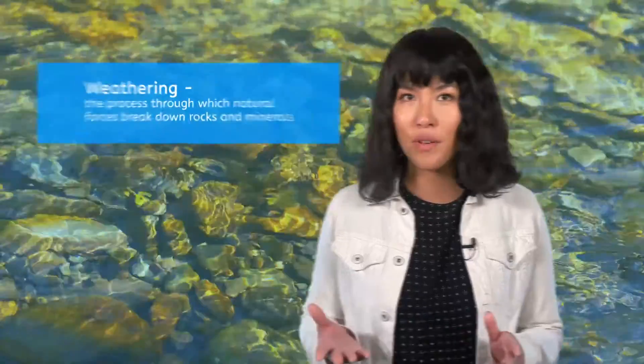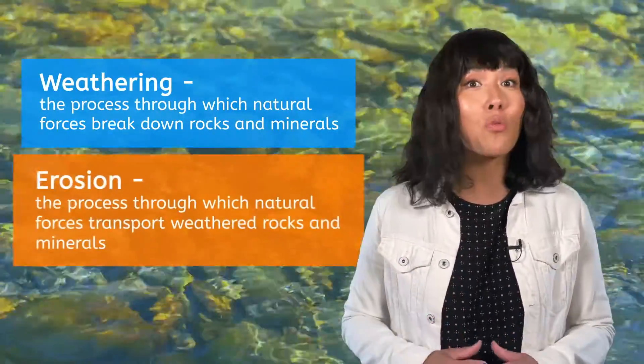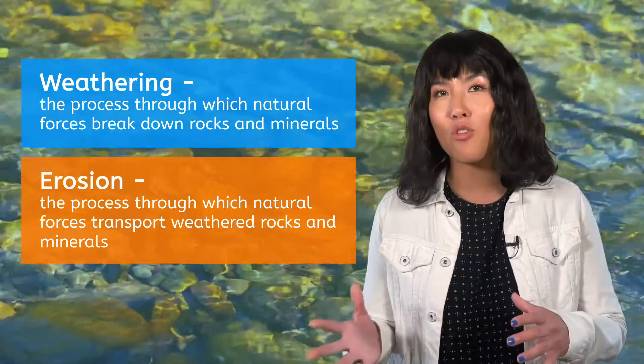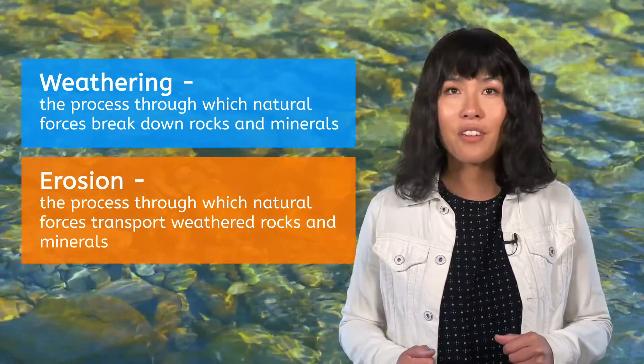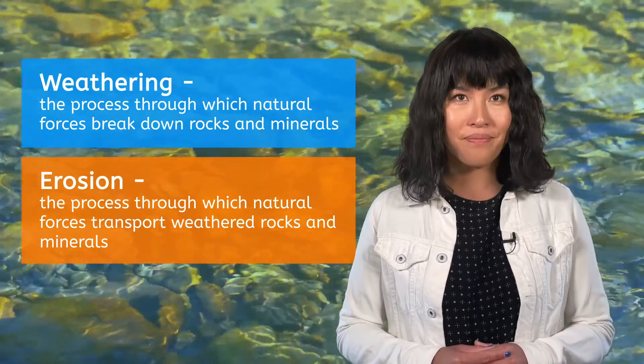In our last lesson, we learned about the processes of weathering and erosion. Weathering is when natural forces break rocks down, and erosion is when these forces move them across the Earth's surface. For now, we're going to mostly focus on erosion. Erosion is a natural process that is part of the rock cycle, and there are a few different ways it can happen.